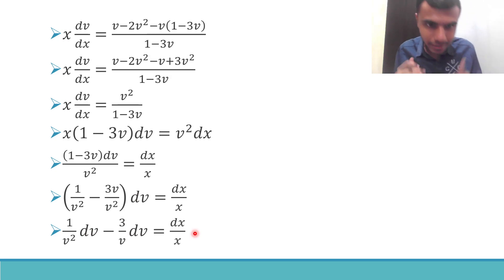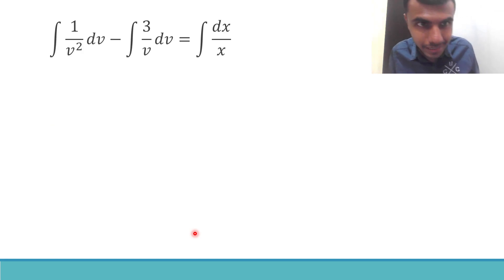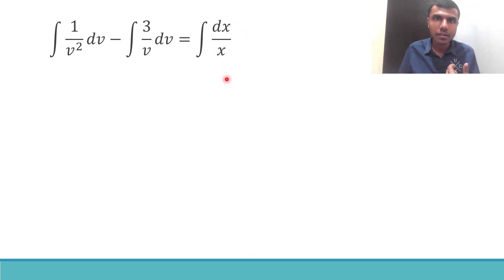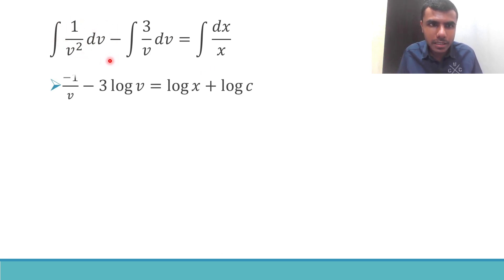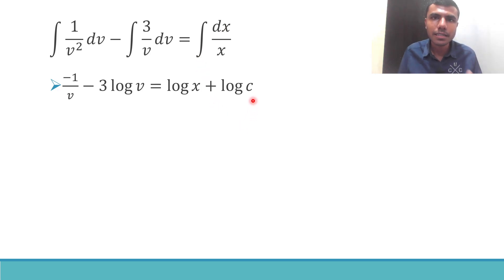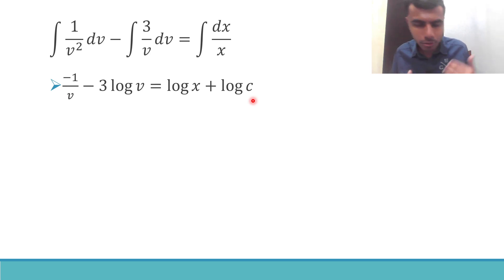Now just integrate both sides. The integral of 1/v² dv minus the integral of 3/v dv equals the integral of dx/x. Integration of 1/v² is minus 1/v, and since 3 is a constant it comes out, and the integral of 1/v dv is log v, giving minus 3 log v. The integral of dx/x is log x, plus integration constant log c.